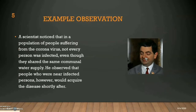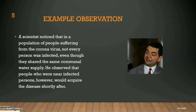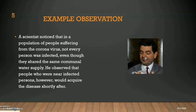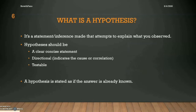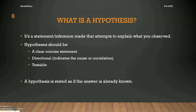Using a real-world example, doctors and scientists the world over are researching ways to help stop the coronavirus pandemic, and this all starts by making observations about the virus. A scientist noticed that in a population of people suffering from coronavirus, not every person was infected even though they shared the same communal water supply. He observed that people who were near infected persons, however, would acquire the disease shortly after. A hypothesis is a statement, not a question, that attempts to explain what you observed. It should be clear, concise, give a potential cause or correlation, and it should be testable. Testable means you can come up with a methodology to verify your hypothesis, and not just attribute it to something without any kind of explanation.